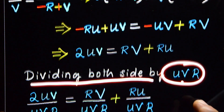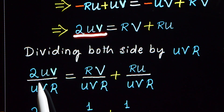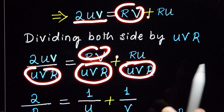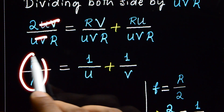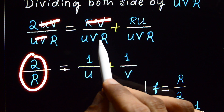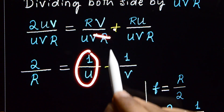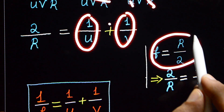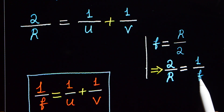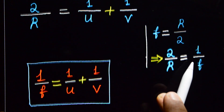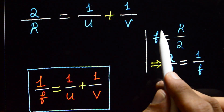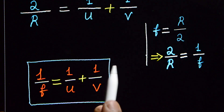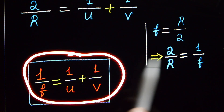Dividing both sides by UVR: 2UV divided by UVR equals RV divided by UVR plus RU divided by UVR. This simplifies to 2 divided by R equals 1 by U plus 1 by V. Now using the relation f equals R divided by 2, so 2 divided by R equals 1 by f. Therefore, 1/f = 1/u + 1/v. This is the mirror equation, for 3 or 5 marks.